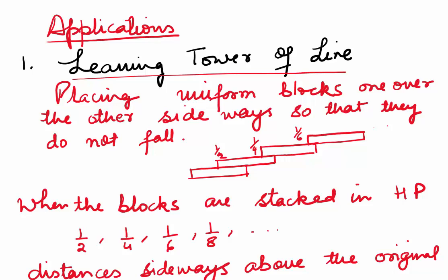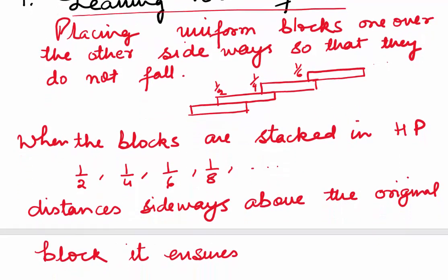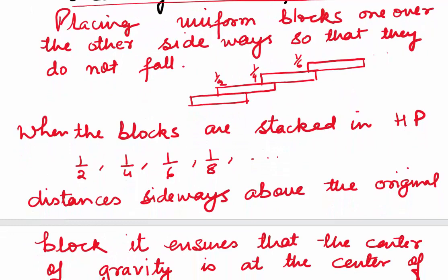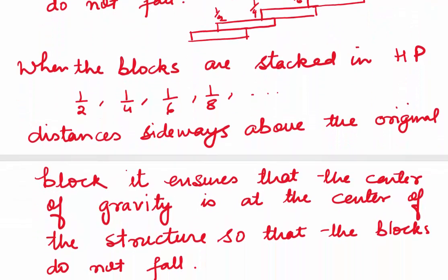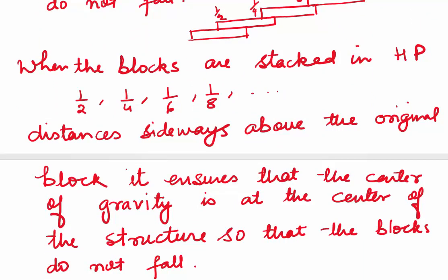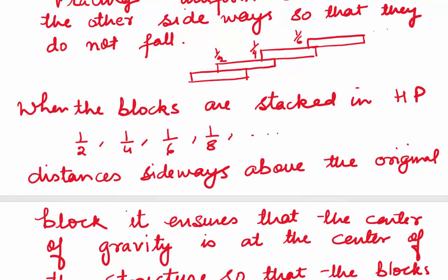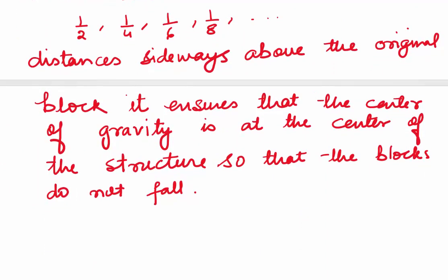The first application is the leaning tower of Lera puzzle. You have to place uniform blocks one over the other sideways so that they do not fall. When the blocks are stacked with offsets in harmonic progression — 1/2, 1/4, 1/6, 1/8 distances sideways above the original block — it ensures the center of gravity is at the center of the structure so the blocks do not fall. The reciprocals 2, 4, 6, 8 are all in arithmetic progression, confirming it's a harmonic progression.